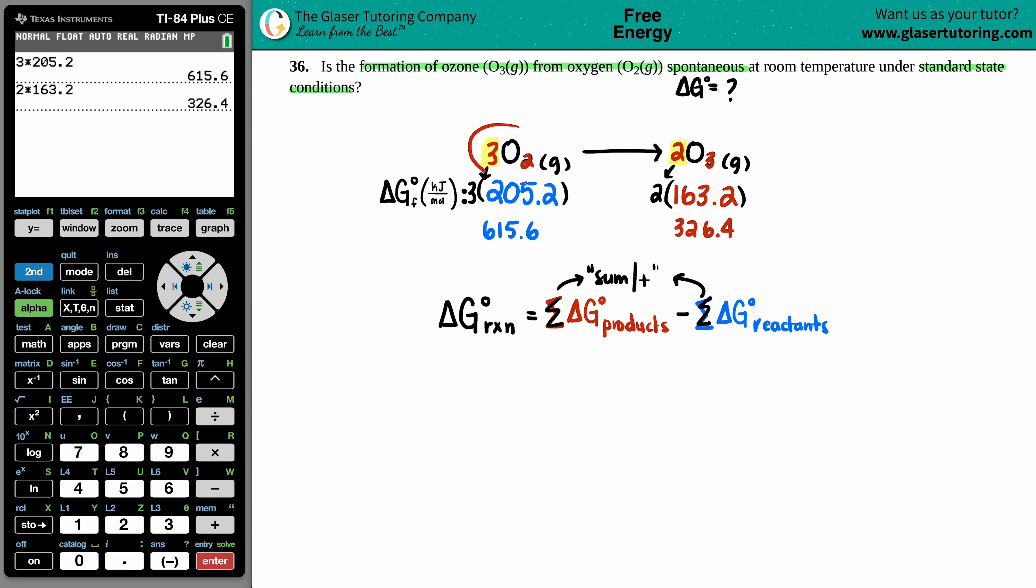There's nothing to add on either side because I don't have any other substances. So these are your final numbers that we're going to plug them into the equation, right? Products minus reactants. So delta G for the whole entire reaction equals 326.4 minus the 615.6.